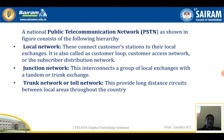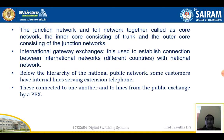Local network: these connect the customer station to their local exchanges. It is also called the customer loop, customer access network, or subscriber distribution network. Junction network: this interconnects a group of local exchanges with a tandem or trunk exchange. Trunk network or toll network: this provides long-distance circuits between local areas throughout the country. The junction network and toll network together are called the core network, with the inner core consisting of trunk and the outer core consisting of junction networks.